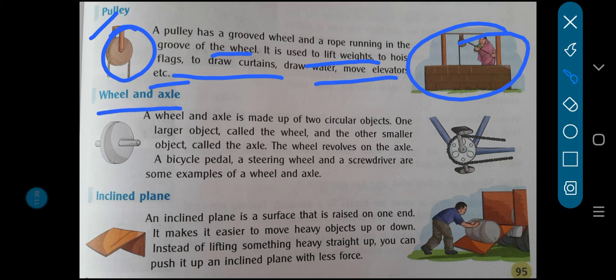The next example of simple machine is wheel and axle. A wheel and axle is made up of two circular objects. One larger object called the wheel and the other smaller object called the axle. The wheel revolves on the axle. A bicycle pedal, a steering wheel, and a screwdriver are some examples of a wheel and axle. Like in a bicycle, you can see the pedals on the axle. This is known as axle, and it rolls on the axle. Wheel is what you call it in Hindi—in your cycles, bikes, scooters, cars, wheels are used.